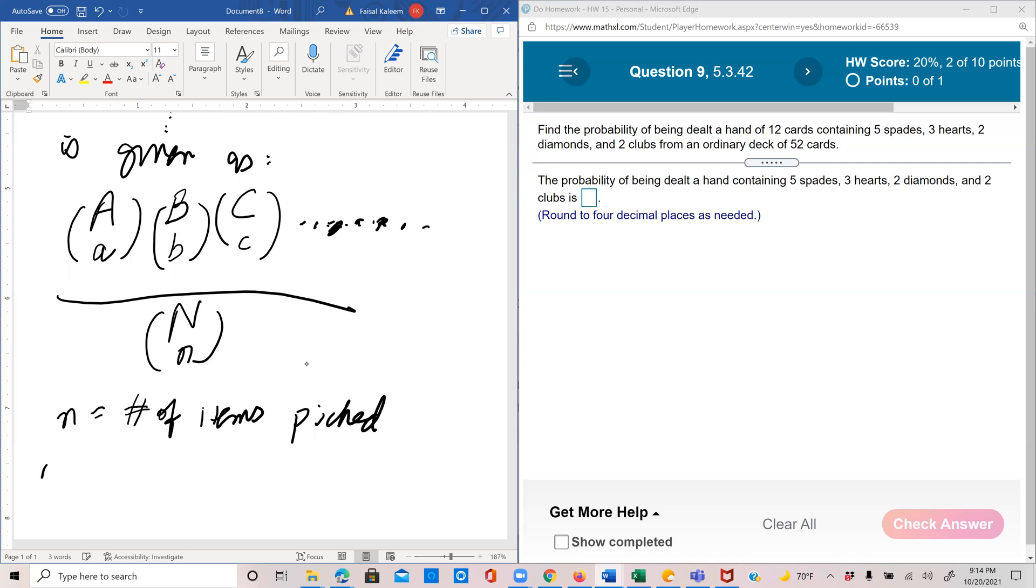So little n would be a plus b plus c—the little a plus little b plus little c and so on. So we have little a items of type 1, little b items of type 2, and so on. And you add them all and you get the little n, which is the total number of items picked. And big N is the total number of items available. So now let's apply this.